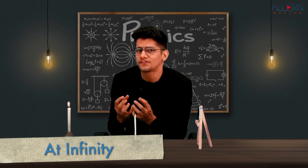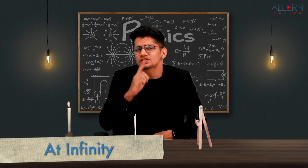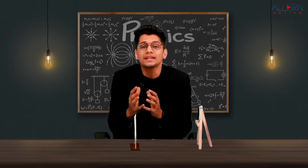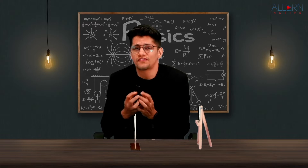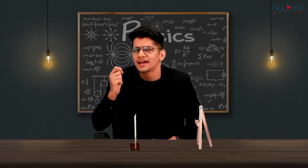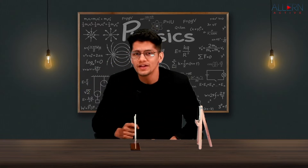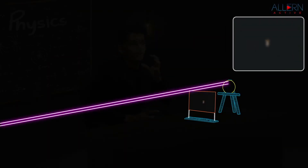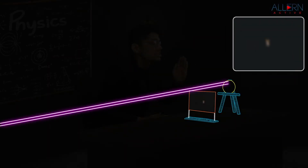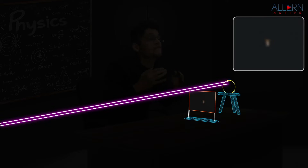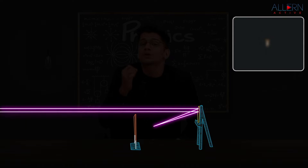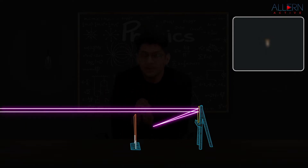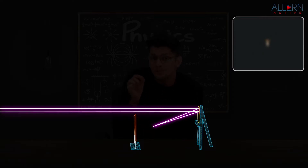First, we are going to shift our object — the source of light — to infinity. When the object is at infinity, the rays of light travel parallel to each other. When they strike the mirror, they concentrate at the focus, so the image will be formed at the focus. We need to move the screen to obtain a sharp image.